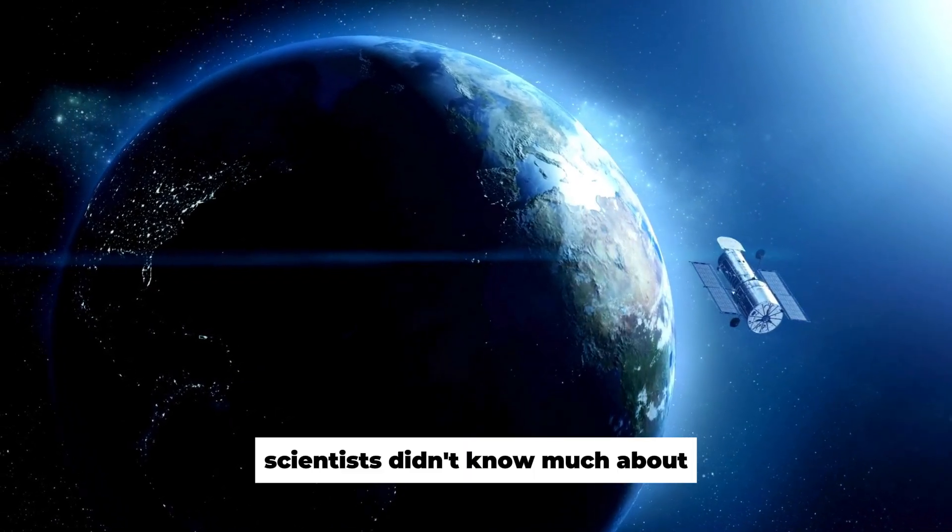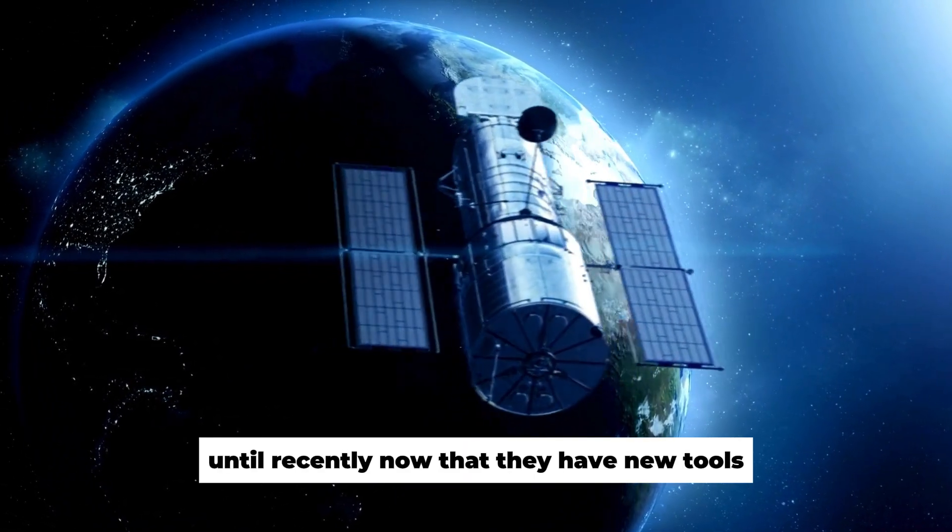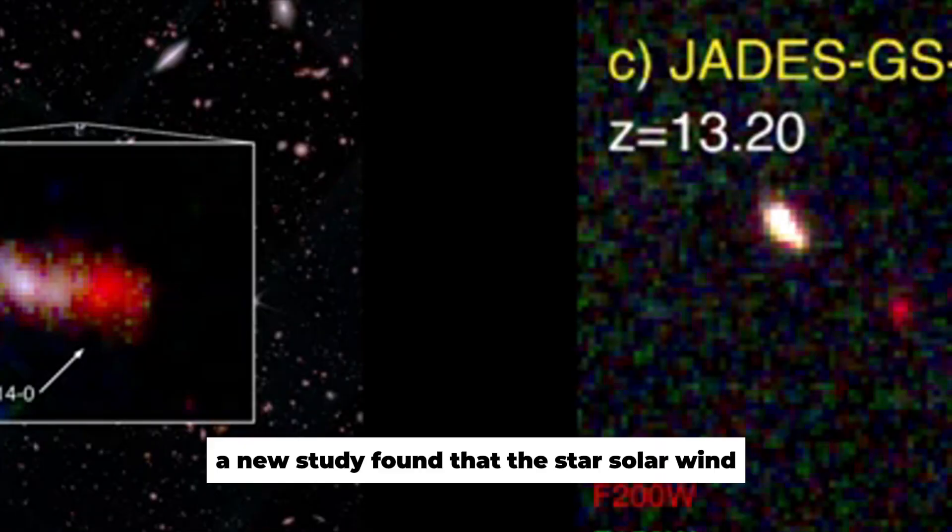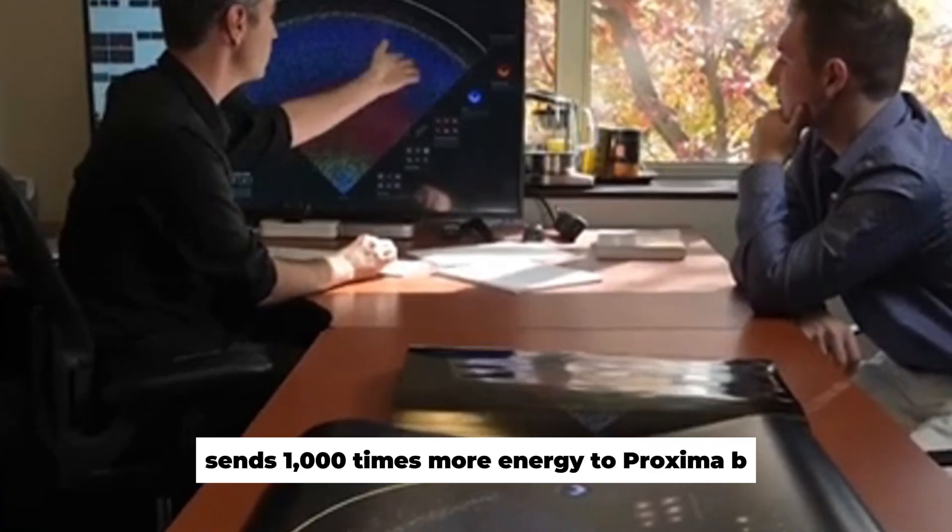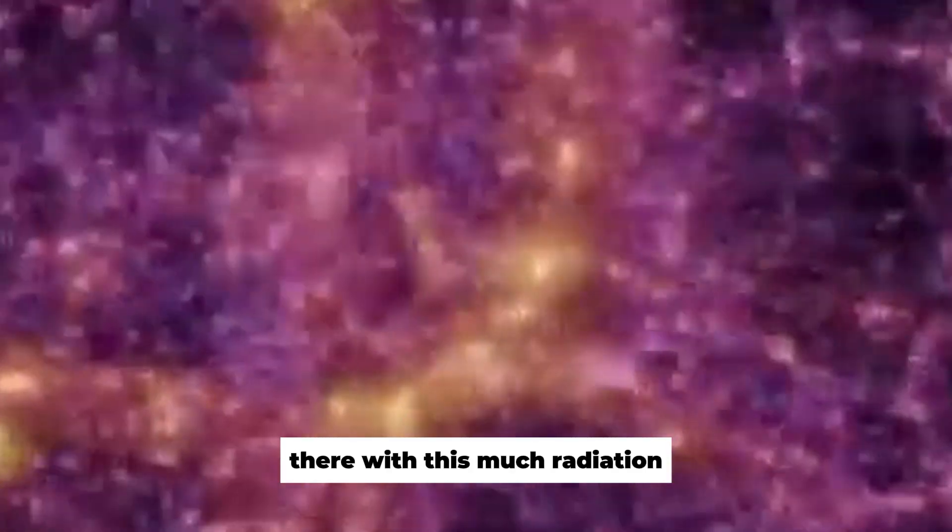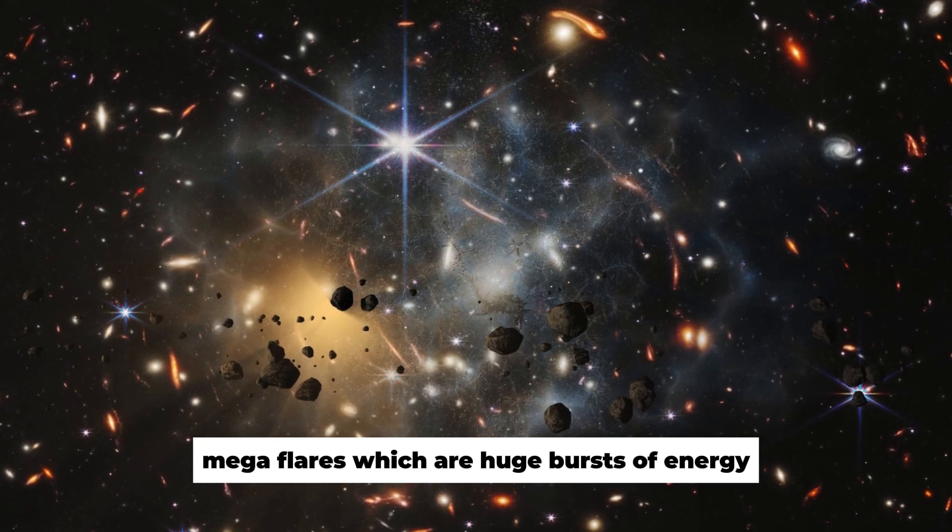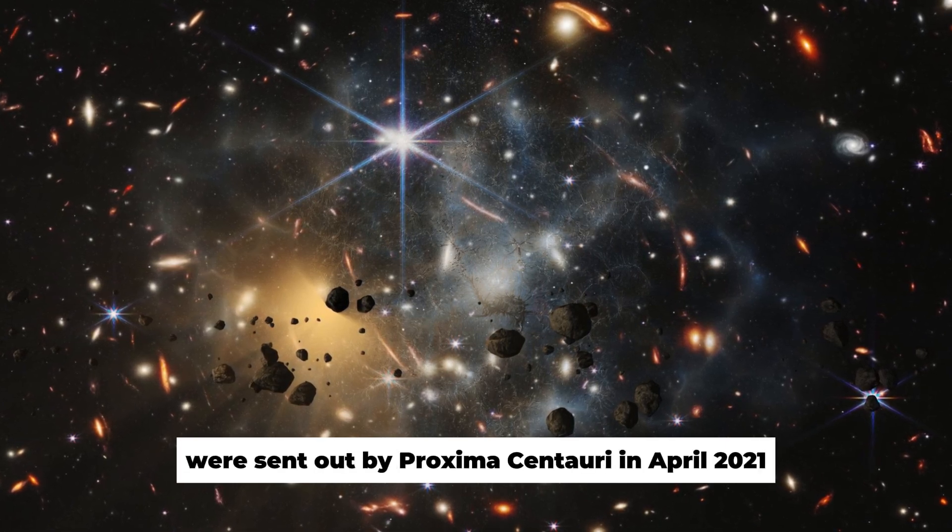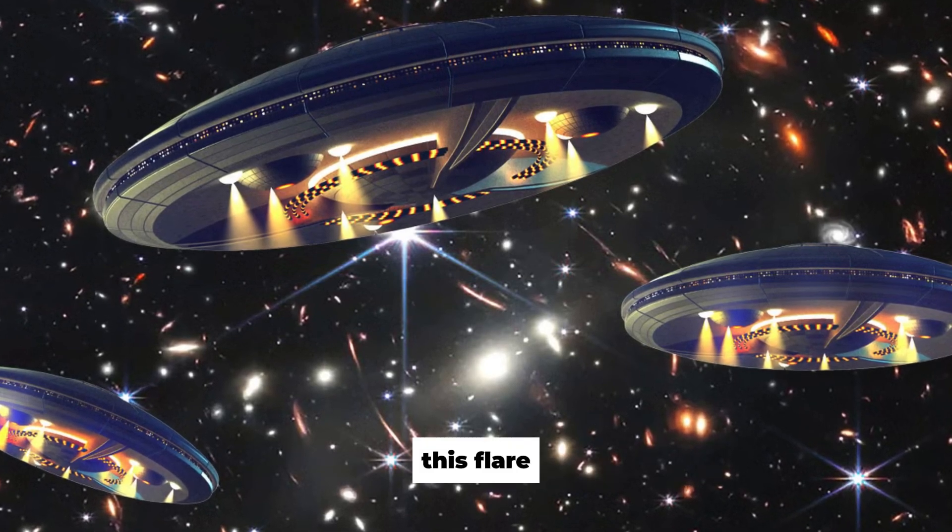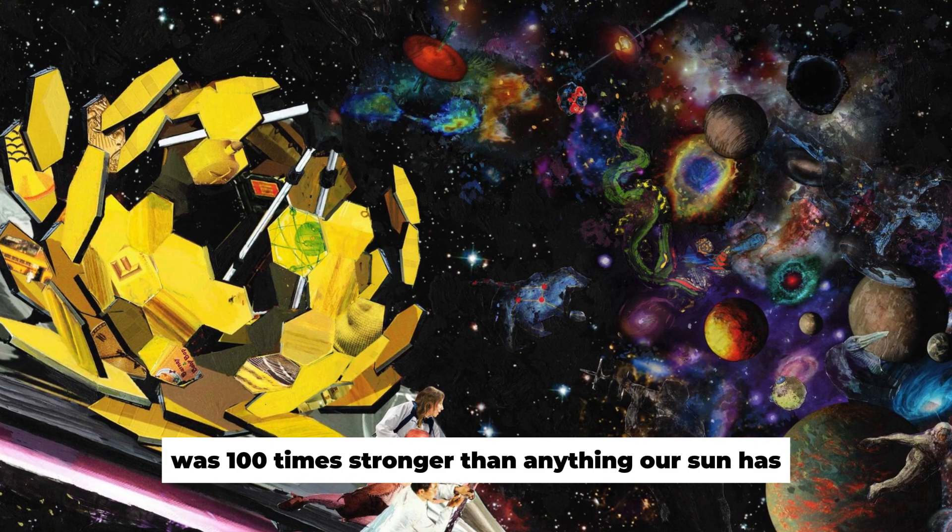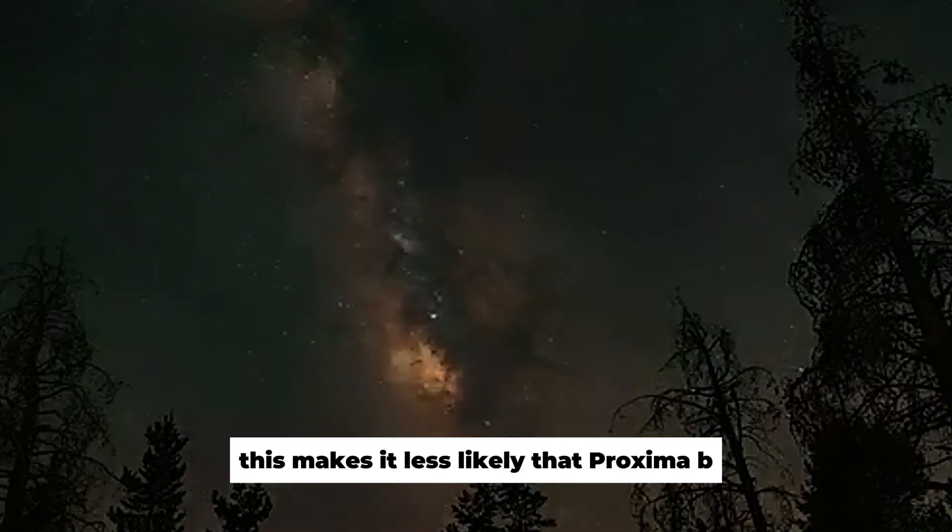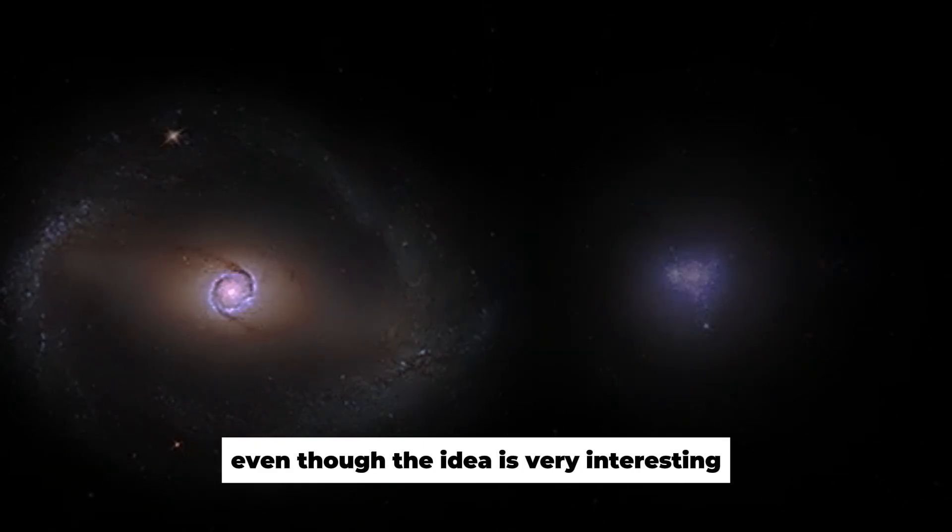Scientists didn't know much about the magnetic field around Proxima Centauri until recently. Now that they have new tools, they know a lot more. A new study found that the star's solar wind sends a thousand times more energy to Proxima b than to Earth. Any living thing would have a hard time staying alive there with this much radiation. Mega flares, which are huge bursts of energy, were sent out by Proxima Centauri in April 2021. They showed how crazy the star can get. This flare was 100 times stronger than anything our Sun has ever done. It looked like a huge blast in space. This makes it less likely that Proxima b could support life, even though the idea is very interesting.